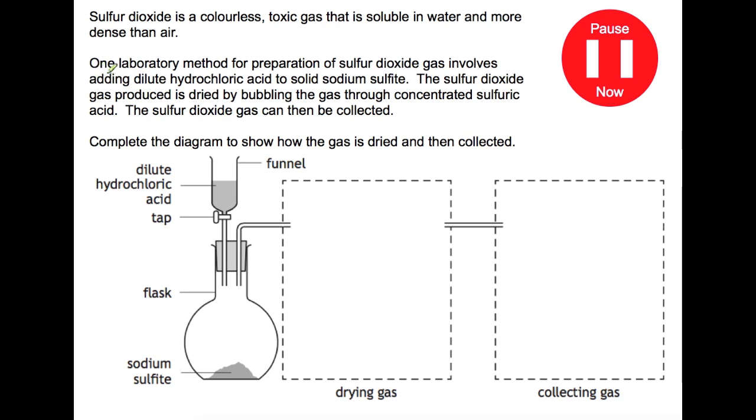So the question goes on to describe an experiment where you're preparing sulfur dioxide gas by adding dilute hydrochloric acid into solid sodium sulfite. So you can see that that's what's happening in this part of the diagram. So we've got dilute hydrochloric acid in a funnel here with a tap that's going through this aim stopper into a flask. You're able to open the tap and the dilute hydrochloric acid will come out and go and react with the sodium sulfite producing sulfur dioxide gas which would then come out through this tube here.